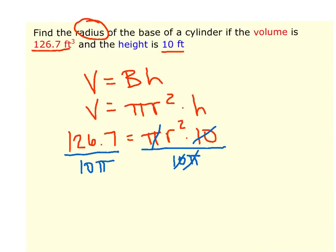Now I'll just tell you when you enter this in your calculator, be really careful. Make sure that you do 126.7 divided by 10 times π, which is probably going to involve you using parentheses around the 10π. The other thing you could do is enter 10 times π to get the decimal, and then do 126.7 divided by that decimal.